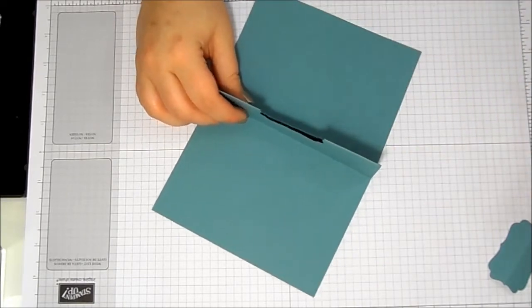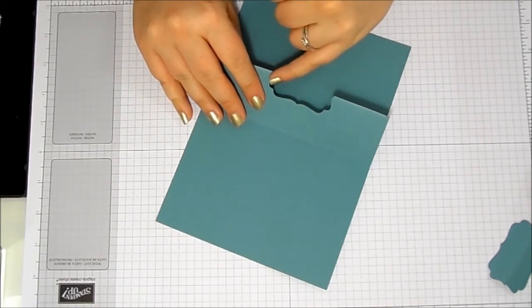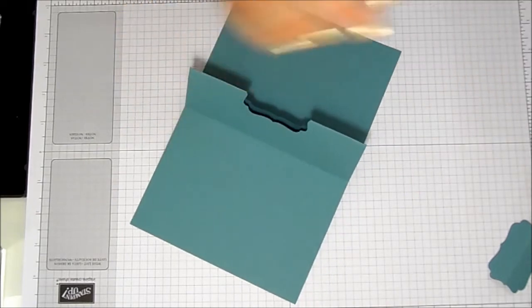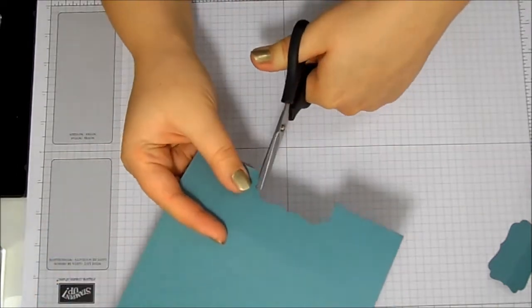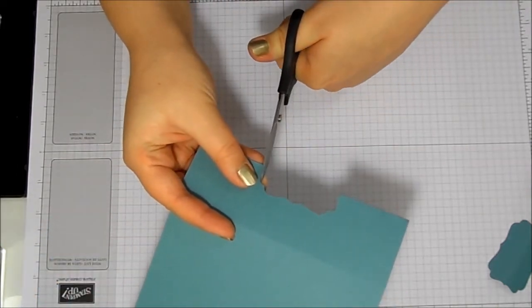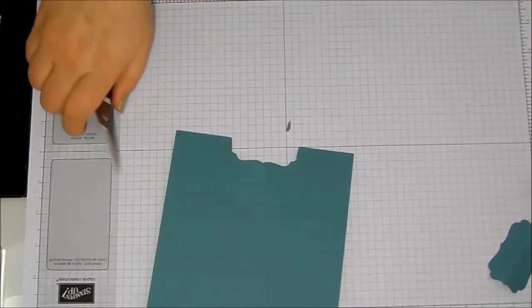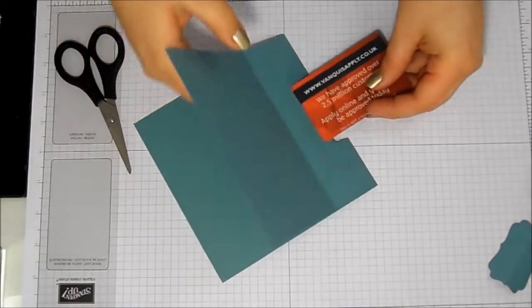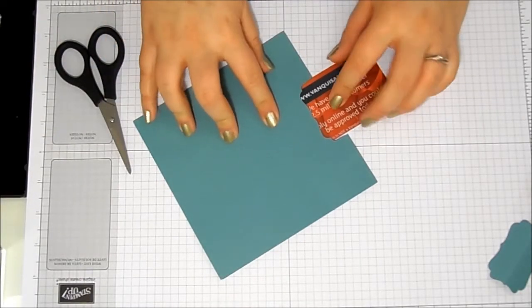But it's not going to fit at the moment because we've got these two little nubby bits. So we're going to take our paper snips and we're just going to straighten up these edges on both sides, and then that allows our gift card to slip in and out easily.